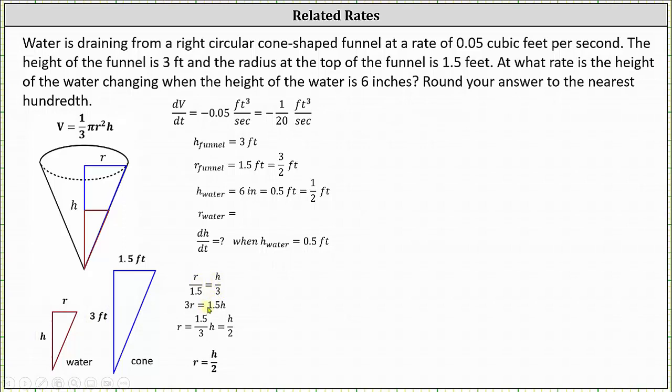Cross multiplying, we have three r equals 1.5h, dividing both sides by three, we get r equals h divided by two. And again, you may have recognized this relationship just by analyzing the two right triangles.